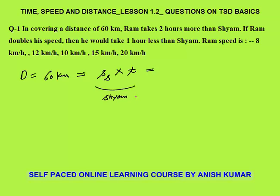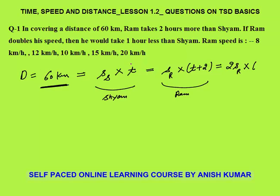Ram covers the same distance. Let speed of Ram be SR. Ram takes two hours more than Shyam, so Ram's time is T plus 2 hours. If Ram doubles his speed, the same distance of 60 kilometers is covered; he would take one hour less than Shyam. So Shyam takes T hours, and Ram will now take T minus 1 hour. You only need to understand the concept — you don't need to cram the questions.